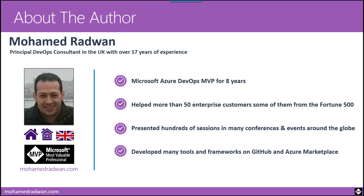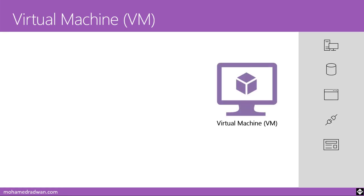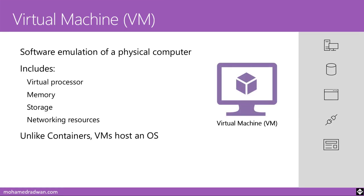So what is a virtual machine? It's a very simple definition — it's just an emulation of a physical computer. It includes a virtual processor, memory, storage, and network. Unlike containers, VMs host an operating system — a complete operating system. This is why you can have a Windows physical machine and on it run a virtual machine for Windows and another virtual machine for Linux.